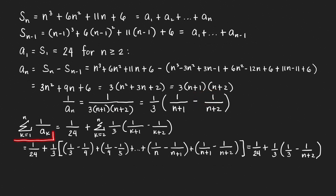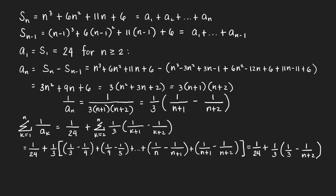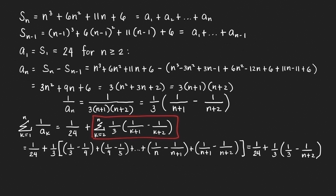Therefore, the summation from k equals 1 to n equals 1 over a sub 1, which is 1 over 24, plus the summation from k equals 2 to n of a sub k. Replacing n by k in our expression, this is a special telescoping series. We move the constant one-third in front of the summation and write out the terms.